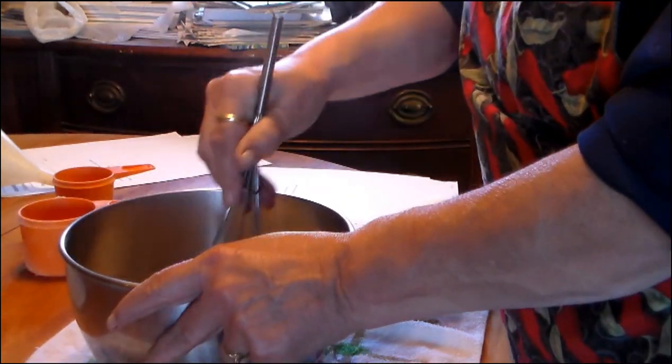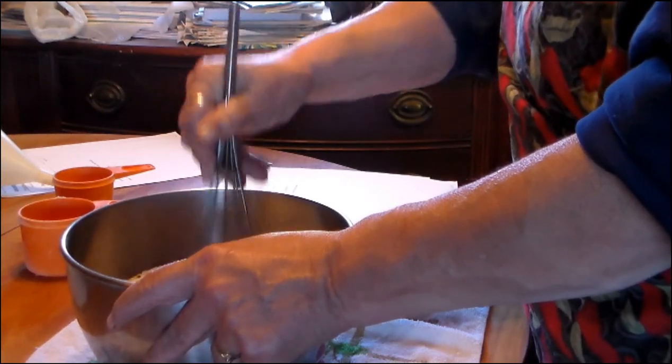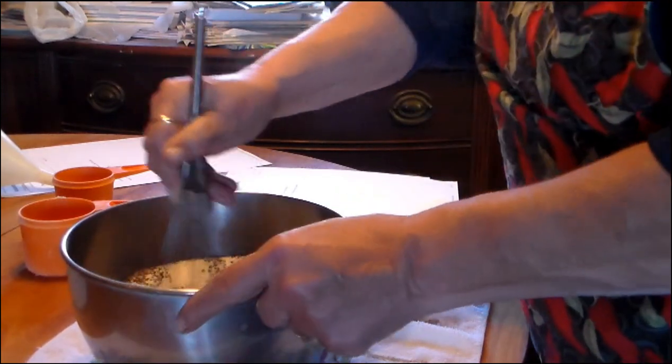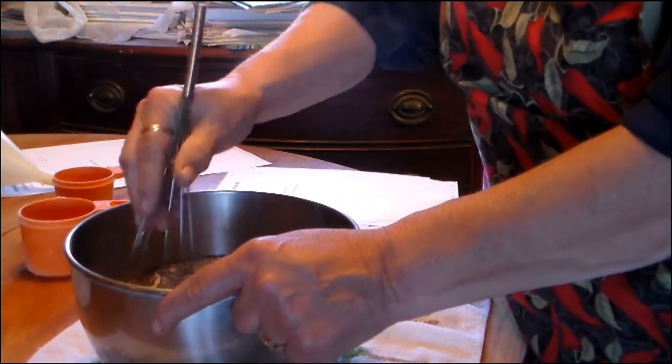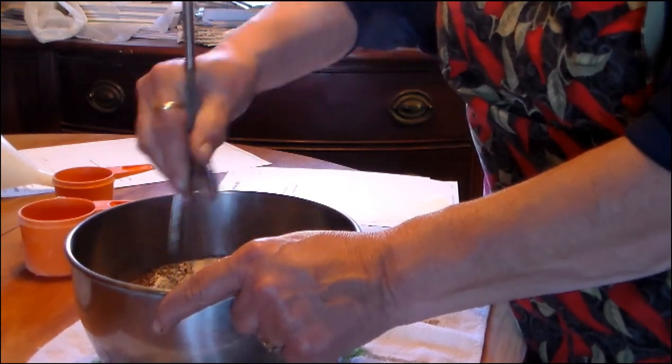Mix that up. And it takes a little bit to mix that brown sugar up because you want little tiny clumps. You don't want very big ones. So you just kind of keep mixing it. I may have to get a fork here. I don't know. I can't remember what I used before.